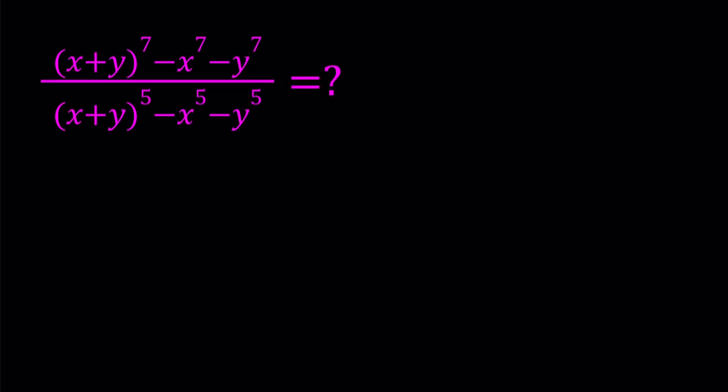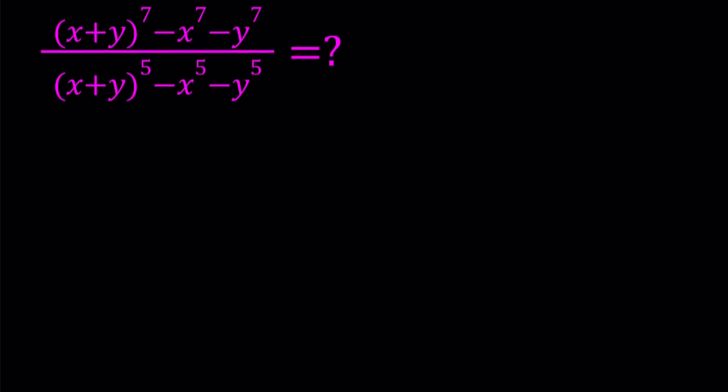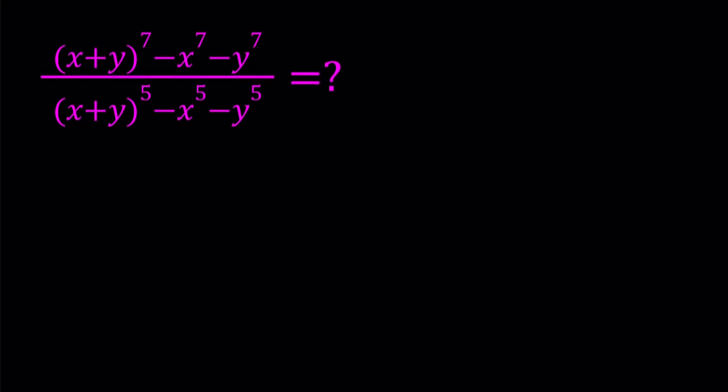How to simplify such an expression? We have the 7th power, we have some 5th powers. Obviously, we're going to use the binomial theorem here. So let me go ahead and work on the numerator and denominator separately. I'll start with the numerator, and I'm going to expand this.